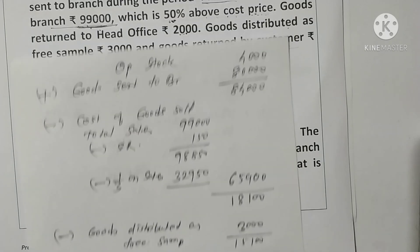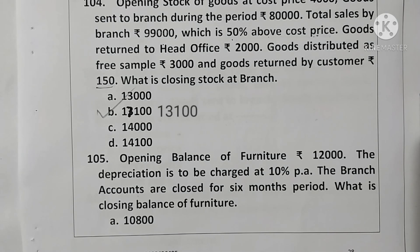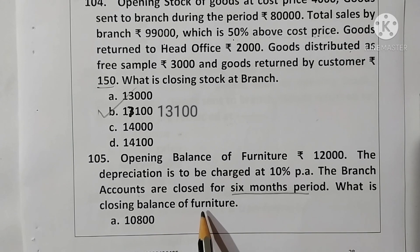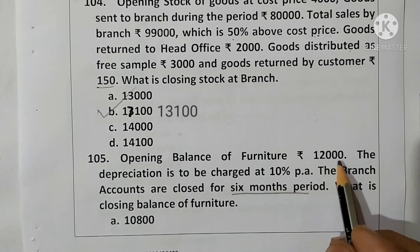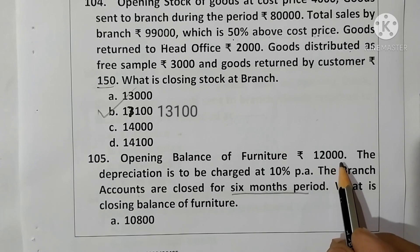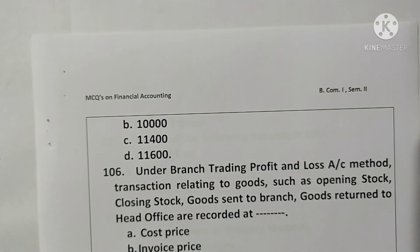Question 105: Opening balance of furniture rupees 12,000; depreciation at 10% per annum. Branch accounts are closed for a six-month period, so depreciation is 5%. 12,000 at 5% equals 600. Closing balance of furniture is 12,000 minus 600 equals rupees 11,400. Option C is correct.